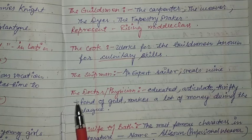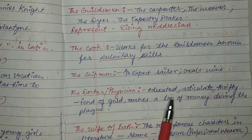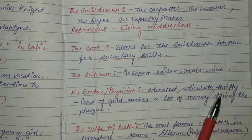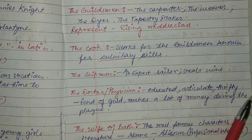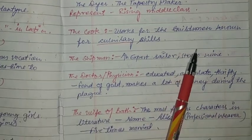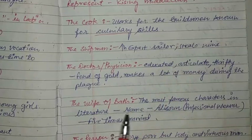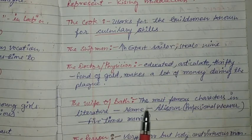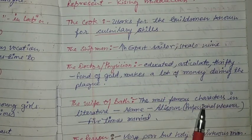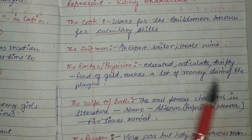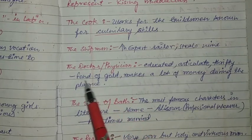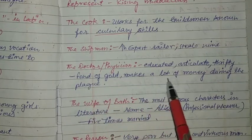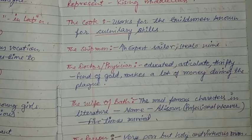The Doctor, or Physician, is educated, articulate, and thrifty — he is fond of gold and makes a lot of money during the plague. This fondness for gold is one of his most notable characteristics.